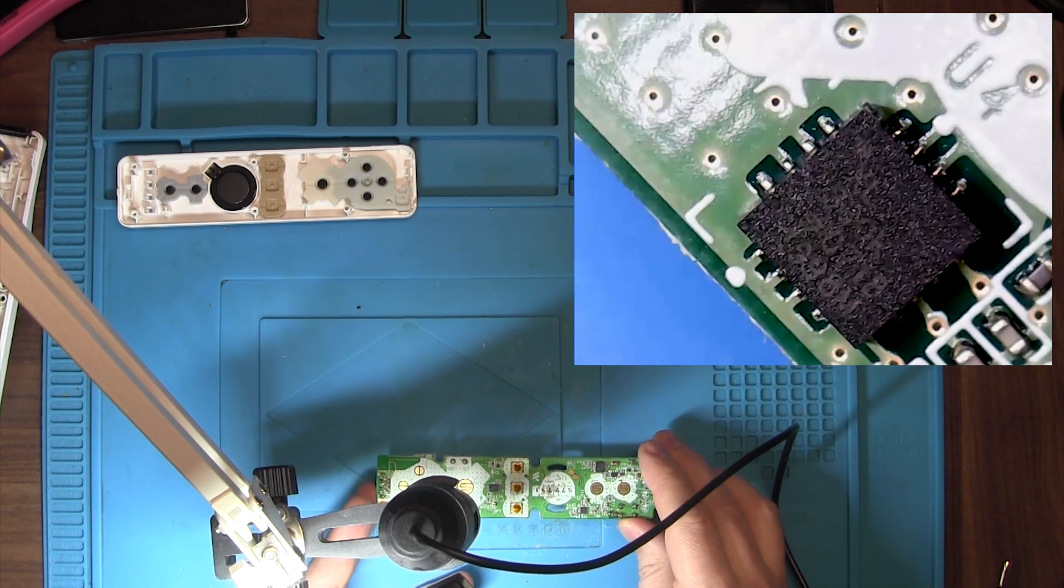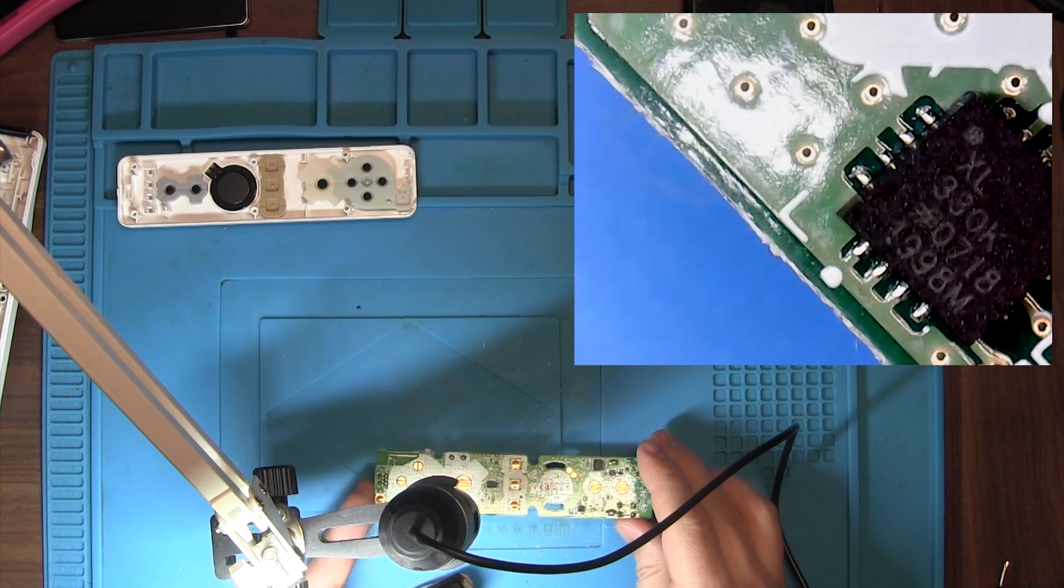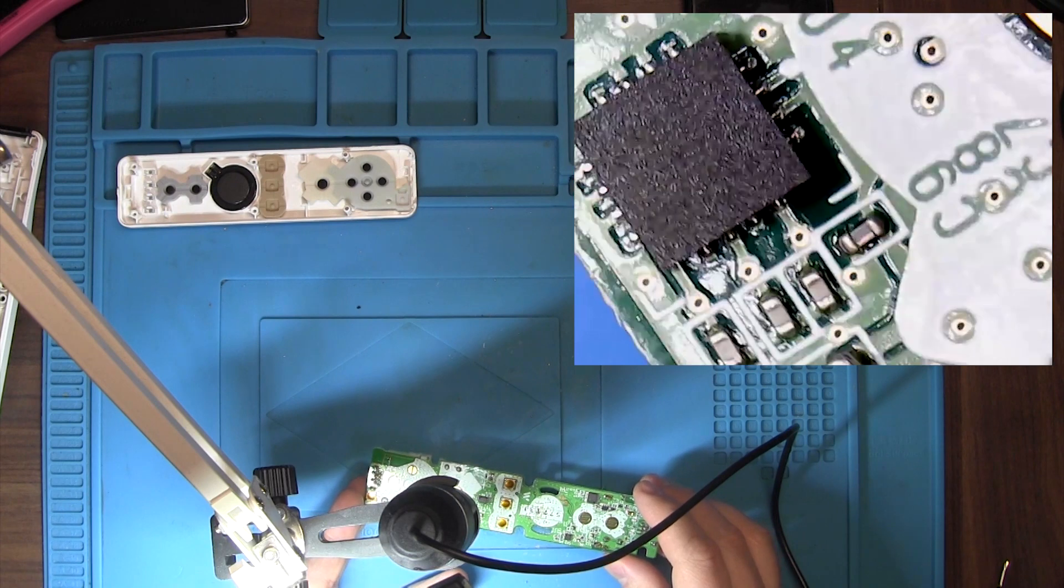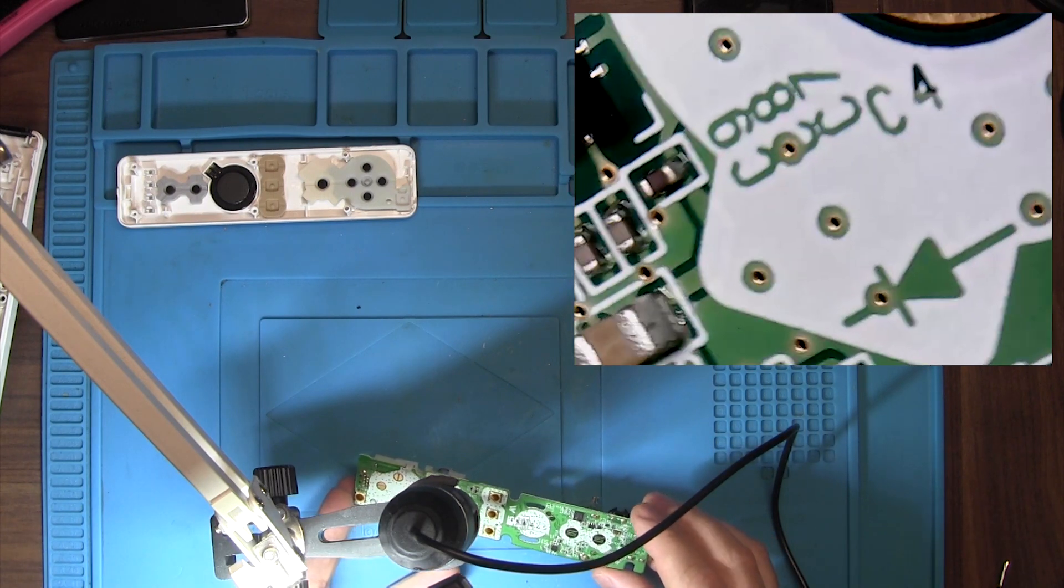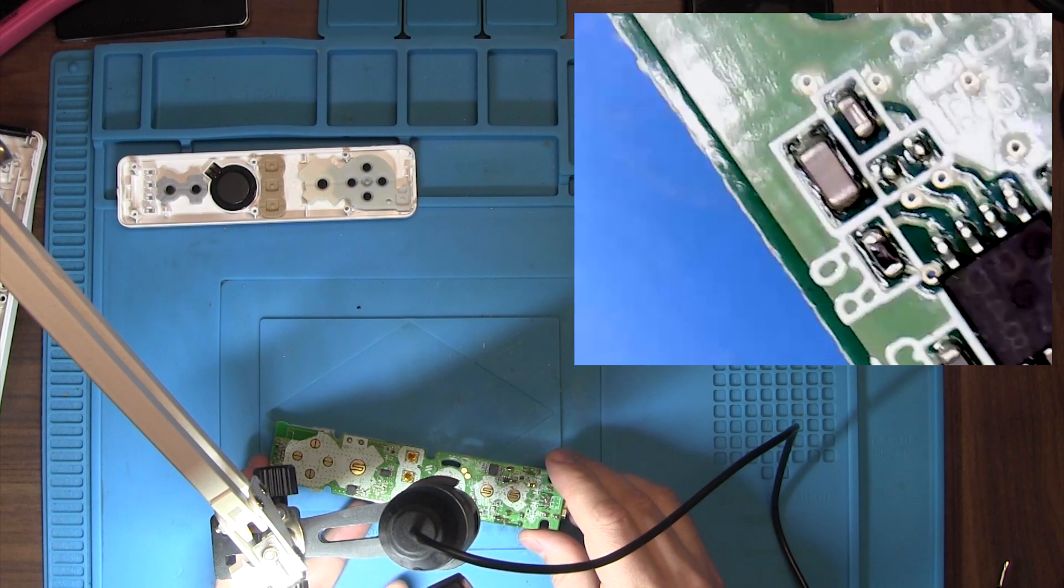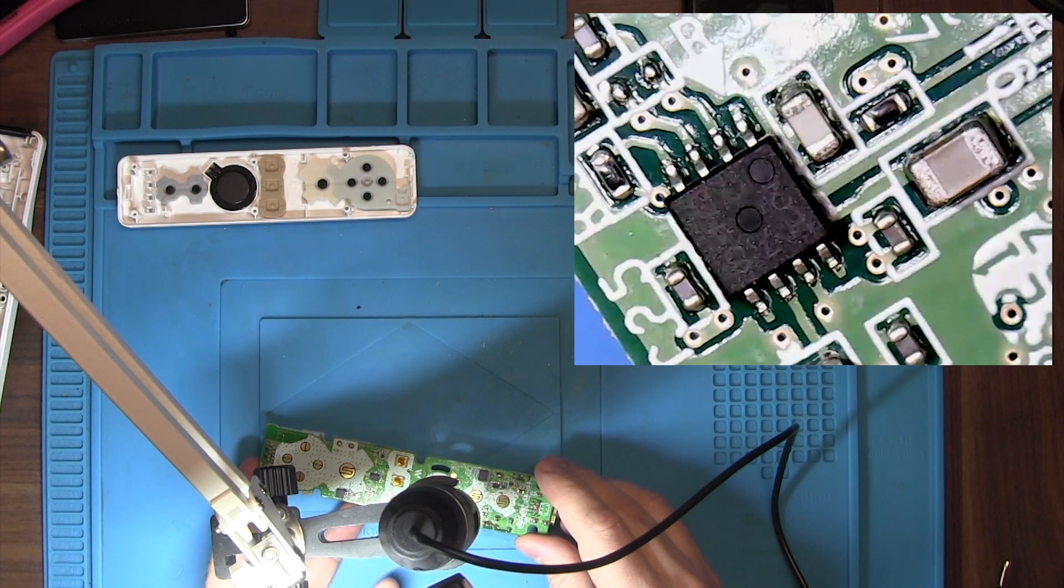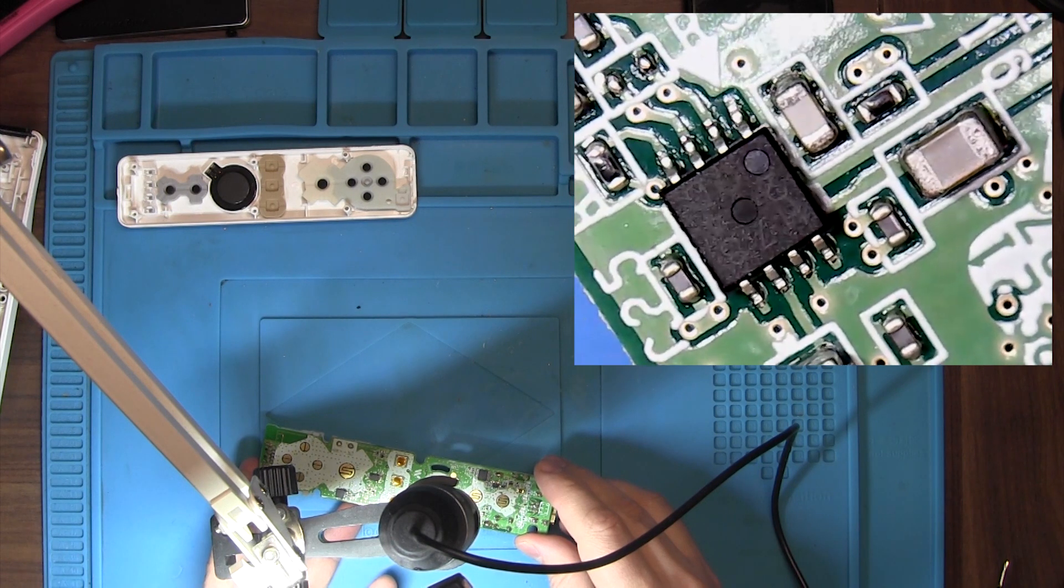The circuit board seems to be okay, looks pretty nice. This is the accelerometer, the chip that is responsible for the motion control. It seems okay, it's not burnt or anything. The components next to it seem to be okay. Let's continue the inspection.